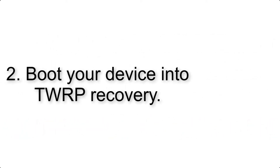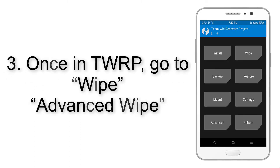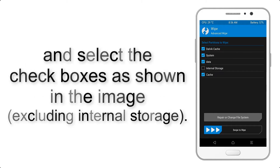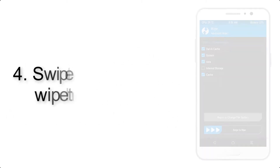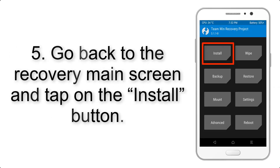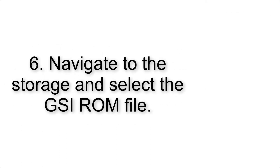Step 2: Boot your device into TWRP recovery. Once in TWRP, click on Wipe, then Advanced Wipe, and select the checkboxes as shown in the image, excluding internal storage. Step 4: Swipe the button to wipe the device. Step 5: Go back to the recovery main screen and tap on the Install button.